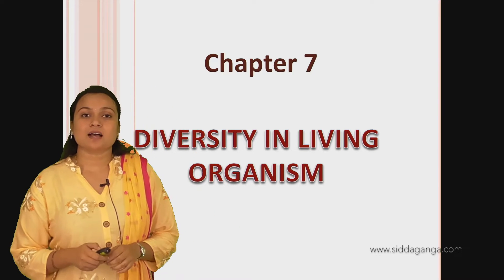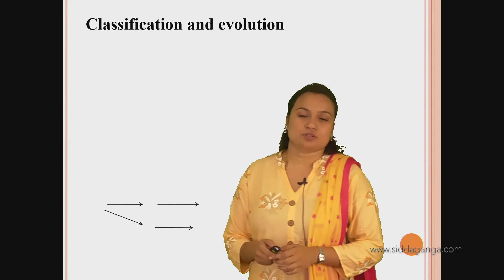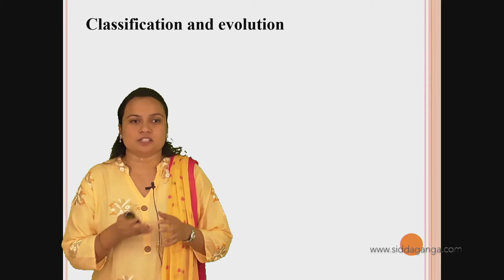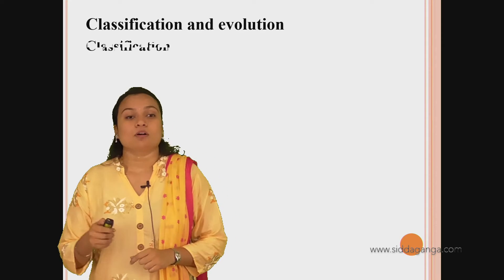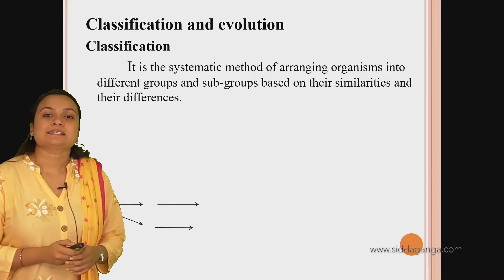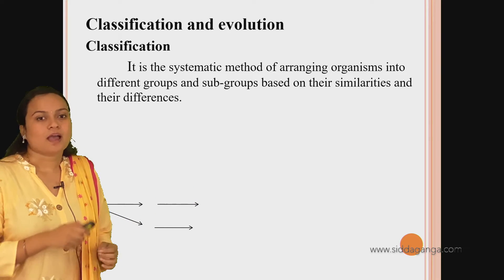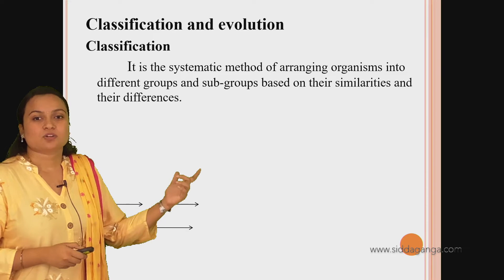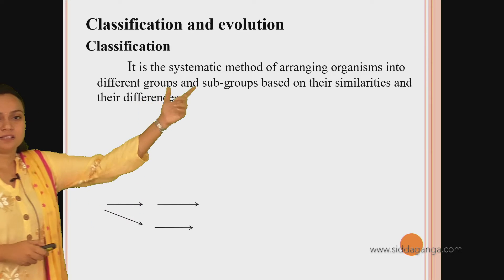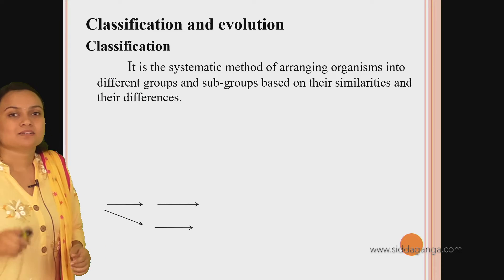Today, let us discuss about the relationship between classification and evolution - how evolution is related to classification. Before that, what is classification? Classification is the systematic method of arranging organisms into different groups and subgroups based on their similarities and dissimilarities. The similarities and dissimilarities are the characters of an organism.